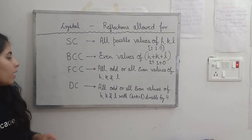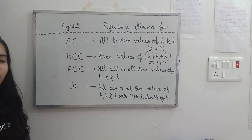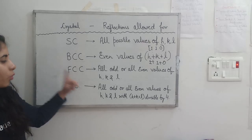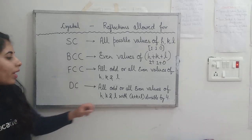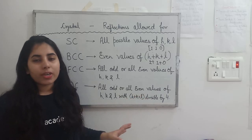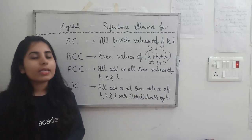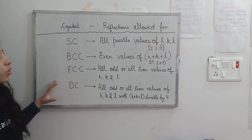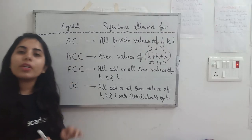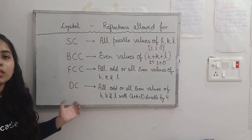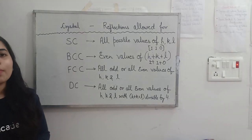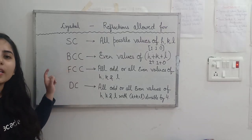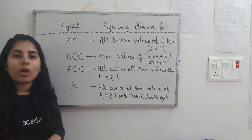For the diamond cubic system, the FCC condition must be fulfilled — meaning h, k, l should be all even or all odd — and additionally the values should satisfy the divisibility condition. If that condition is satisfied, then reflections will be allowed for the diamond cubic crystal system. You have to memorize these selection rules for h, k, l values for different crystal systems, because corresponding questions will be asked in the exam.